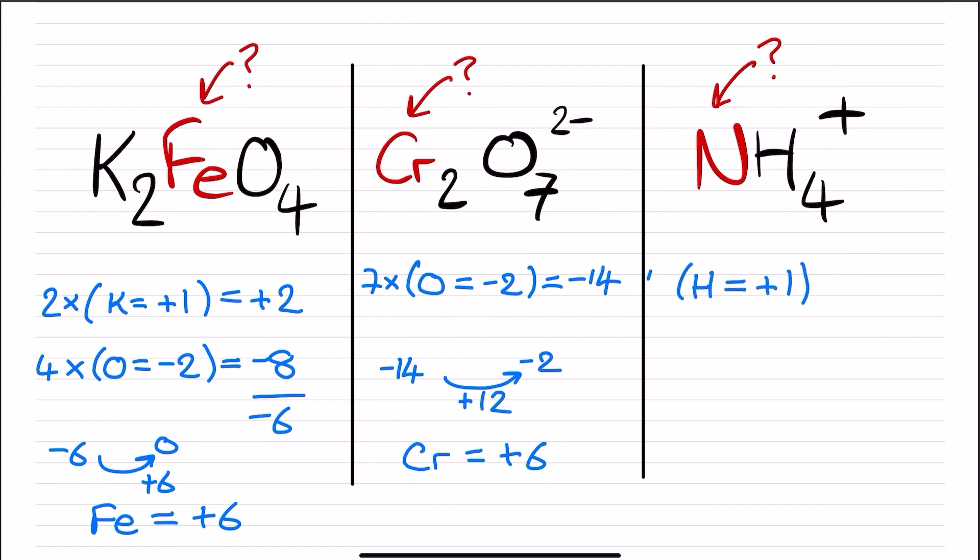Finally, here we have this familiar ammonium ion, which has a plus one ionic charge. Each hydrogen is presumed to be positive one, and there are four of them, so that's a positive four contribution.